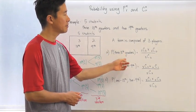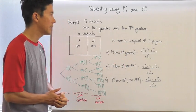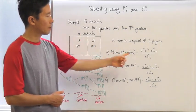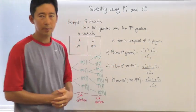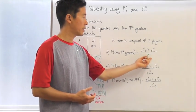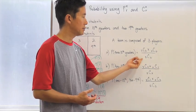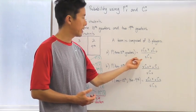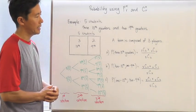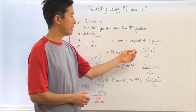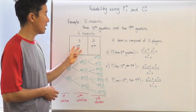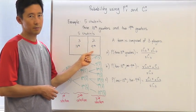For the probability of choosing three tenth graders for this team, I need to choose three players from five students — that gives us the total number of ways to choose three students from five, which is our denominator. For the numerator, I'm choosing three students from the tenth graders and zero students from the ninth graders.